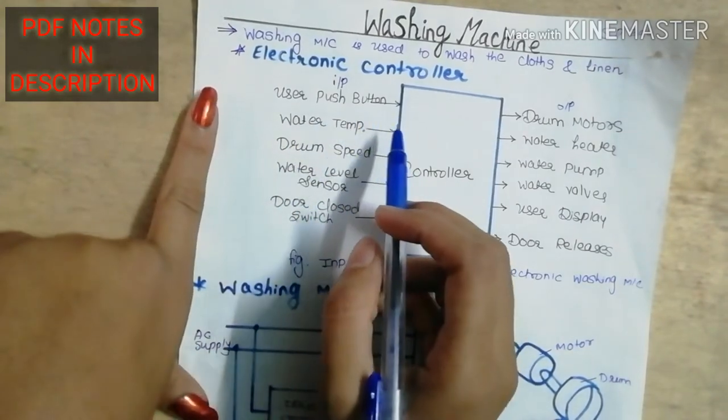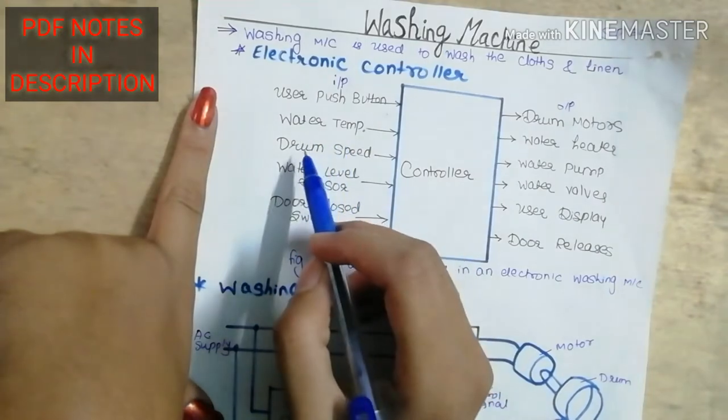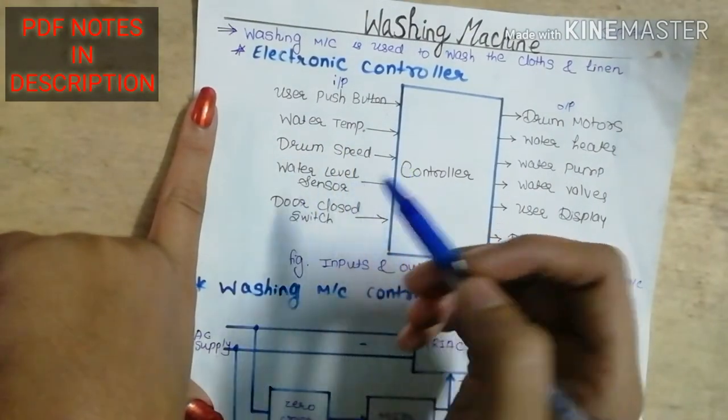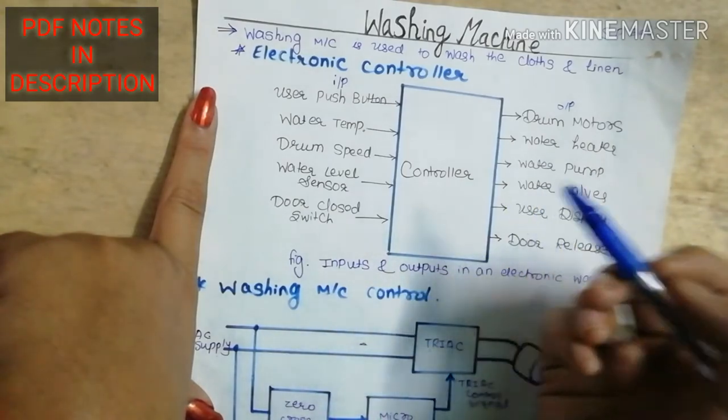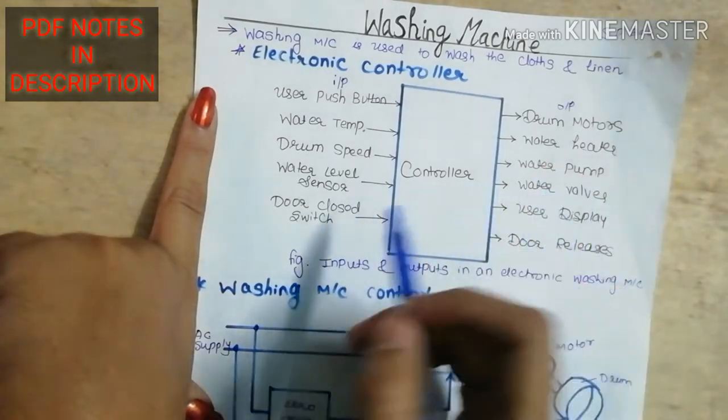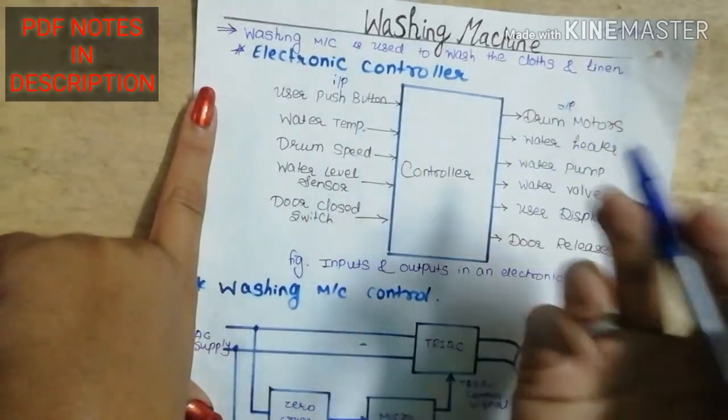When the user presses and pushes the button, they see the water temperature, the speed, the drum speed rotation, the level using the sensor, and whether the washing machine door is closed or not.